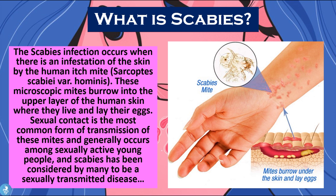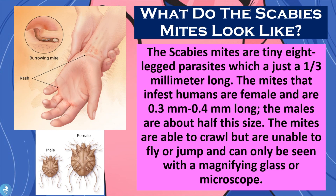Now let's take a closer look at what these mites look like. The scabies mites are tiny eight-legged parasites, just about one-third of a millimeter long. The mites that infect humans are female and are about 0.3 to 0.4 millimeters long, while the males are about half the size. The mites are able to crawl but are unable to fly or jump, and can only be seen with a magnifying glass or microscope.